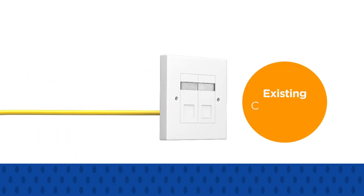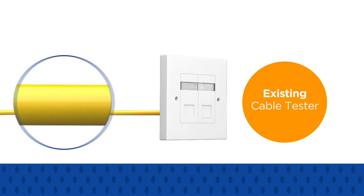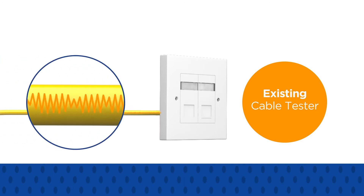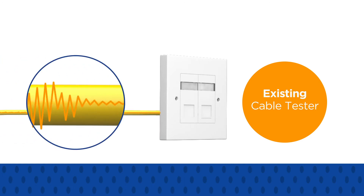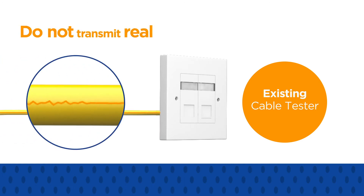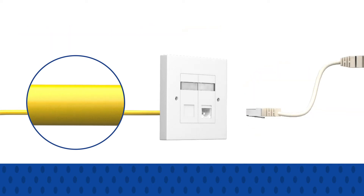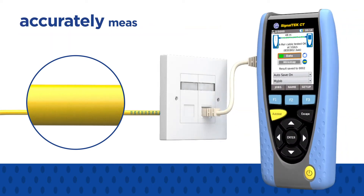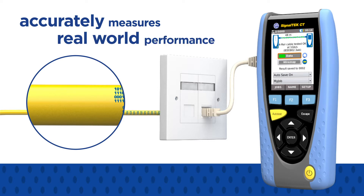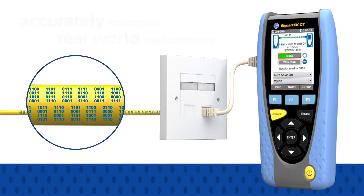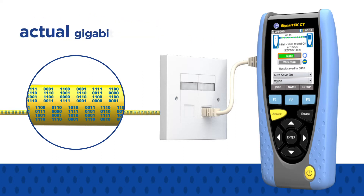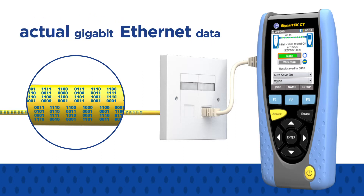Existing cable testers often do a poor job of simulating network traffic because they do not transmit real Ethernet frames. However, SignalTex CT accurately measures real-world performance by loading the cable with actual Gigabit Ethernet data.